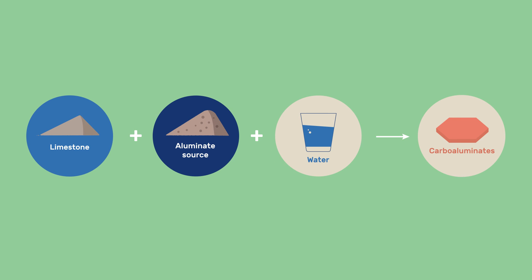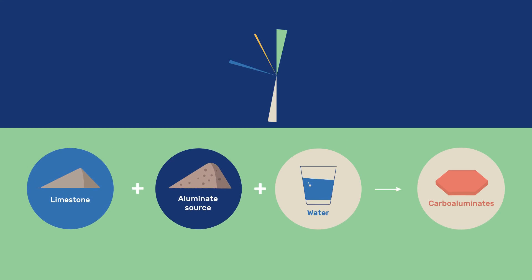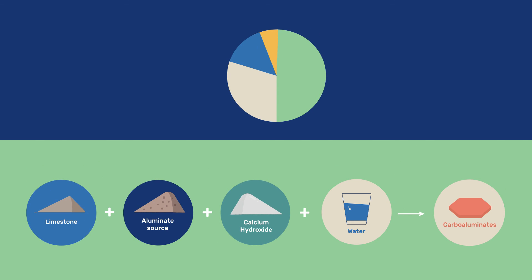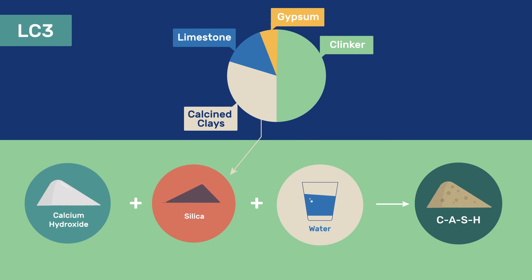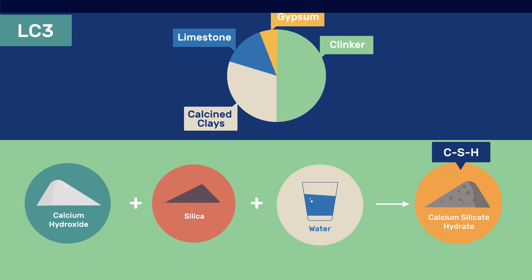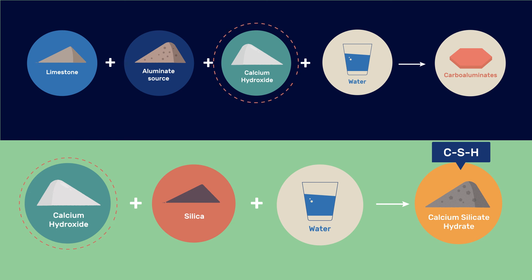An example of increasing importance is the reaction of limestone with aluminate phases to produce mono- or hemi-carboaluminates, as explained in our video on limestone as SCM. This reaction is particularly well exploited by including calcined clays along with limestone, as in LC3 — the so-called limestone calcined clay cement — because additional alumina from those calcined clays sustains the formation of carboaluminates, while silica, also provided by the clays, can form C-A-S-H or C-S-H. Both types of reactions consume calcium hydroxide.